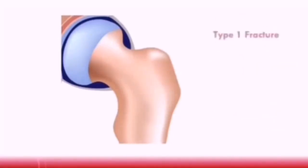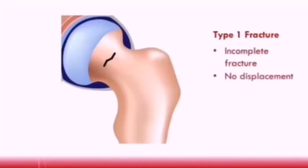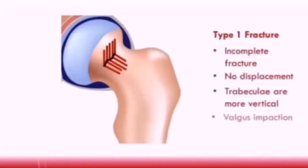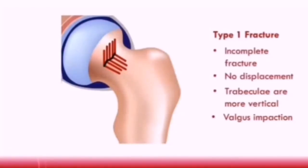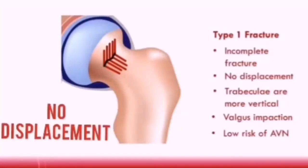A Garden's type 1 fracture is incomplete with no displacement. The trabeculi above the fracture line are more vertical, and there is valgus impaction because the femoral head is in a more upright position. A key point about this type of fracture is that there is a low risk of avascular necrosis because it is an incomplete fracture with no displacement.